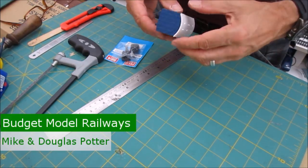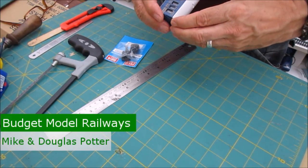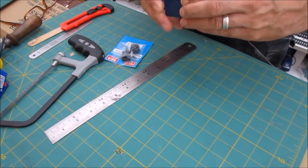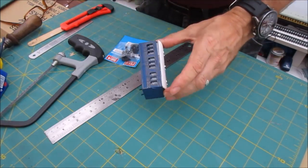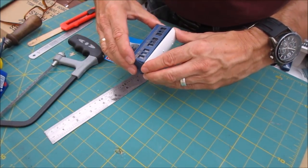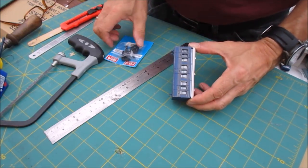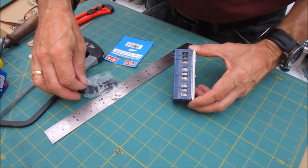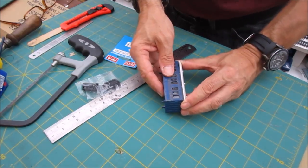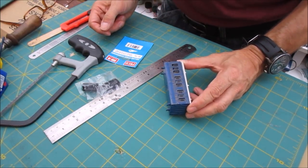Hello there and welcome to Budget Model Railways, the home of doing things cheaply and simply. As some of you probably know, I've got a bit of an interest in 009. Our first layout that we ever built was 009. You can get quite a lot of rolling stock for that now, but it's very very expensive.